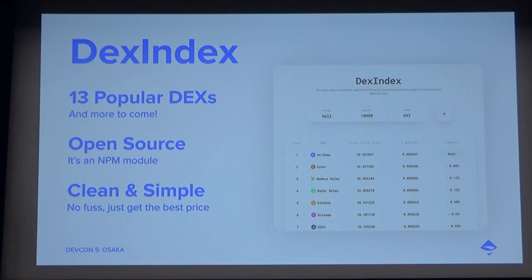As you can see, you just select an action — sell or buy — an amount, and a token. And you'll get a list of DEXes with quotes ordered by best price.